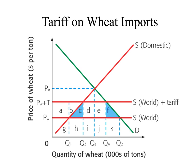This area here — A plus B plus C plus H plus G — is now U.S. domestic producer revenue. This area here — I plus J — is the new revenue for foreign producers.